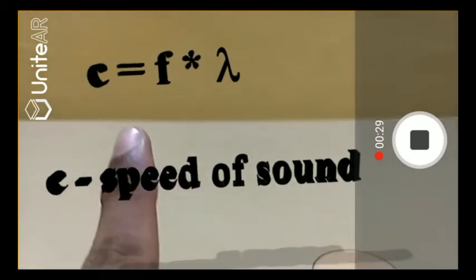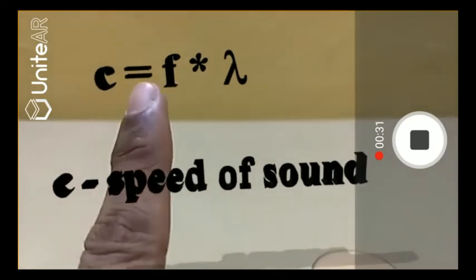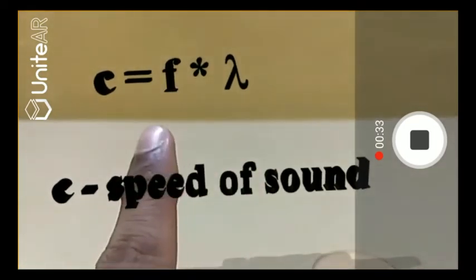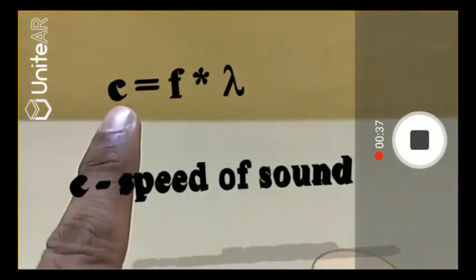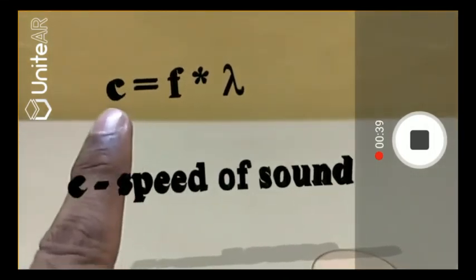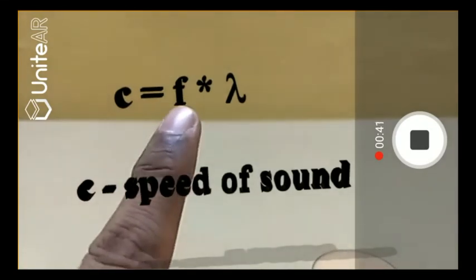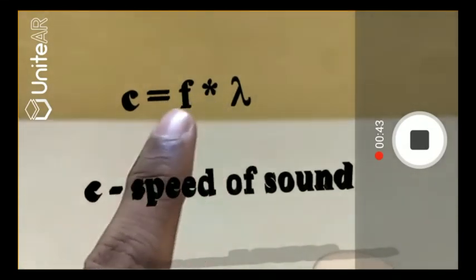But it is independent of frequency and wavelength. As you can see here, the speed of sound is related to the frequency and wavelength. It's a product of frequency and wavelength. And since speed of sound is constant in a given medium at a given temperature, we can derive an interesting relationship, which is the frequency is inversely proportional to the wavelength.